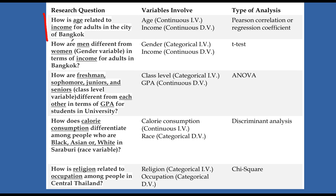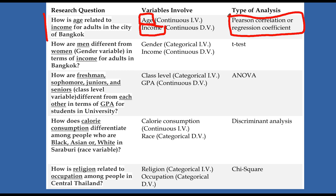The first research question: How is age related to income for adults in the city of Bangkok? Age in this example was measured in a continuous manner. Income was also measured in a continuous manner. So we have an independent variable that is continuous and a dependent variable that is continuous. Therefore we can do a Pearson correlation or regression coefficient — those are the tools we can use to explain this statistically.